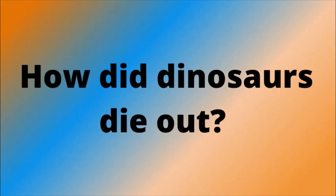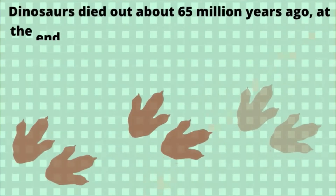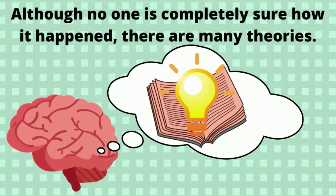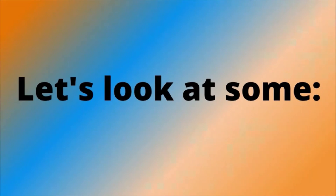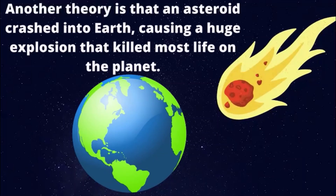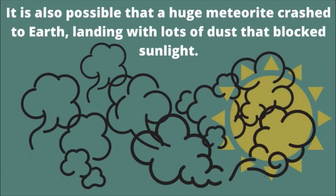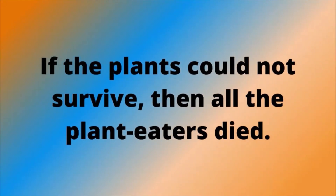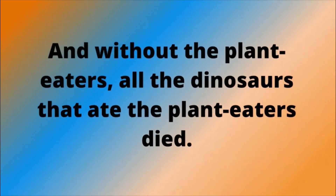How did dinosaurs die out? Dinosaurs died out about 65 million years ago at the end of the Cretaceous period, having lived on Earth for about 165 million years. Although no one is completely sure how it happened, there are many theories. One idea is that volcanoes erupted, releasing poisonous gases that dinosaurs could not survive. Another theory is that an asteroid crashed into Earth, causing a huge explosion that killed most life on the planet. It is also possible that a huge meteorite crashed to Earth, kicking up so much dust that it blocked sunlight — without sunlight, plants could not survive, then all the plant-eaters died, and without plant-eaters, all the dinosaurs that ate them died too.